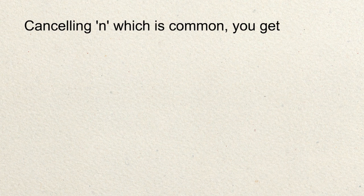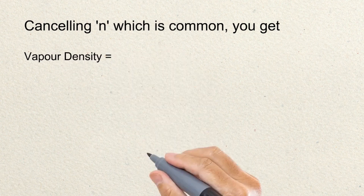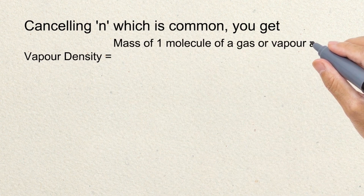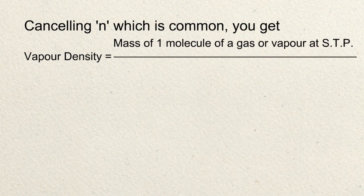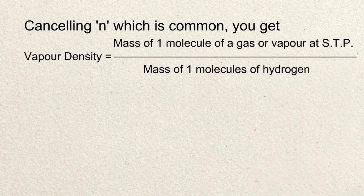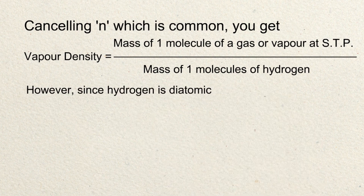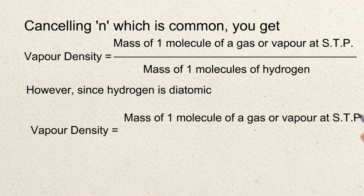After canceling N, that means N equals 1. So vapour density is equal to the mass of one molecule of gas or vapour divided by the mass of one molecule of hydrogen. Now, hydrogen is a diatomic molecule, so one molecule of hydrogen equals two atoms of hydrogen.